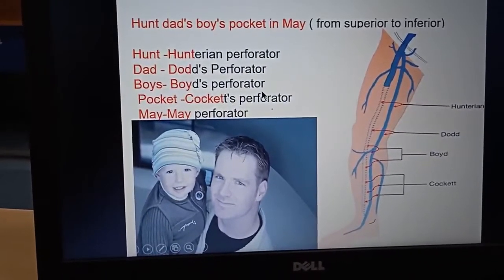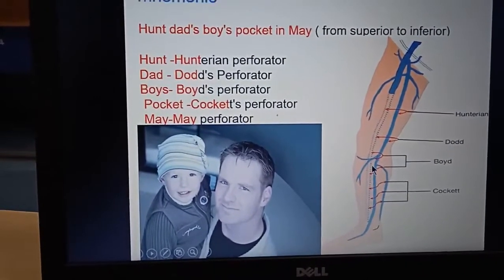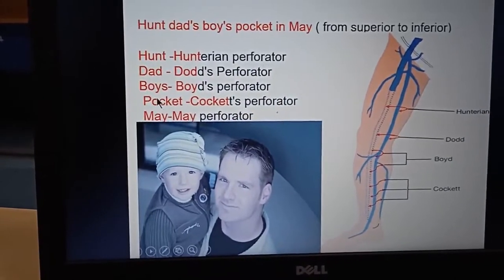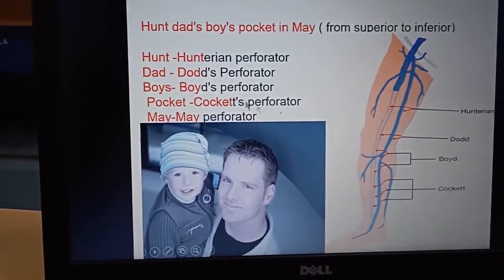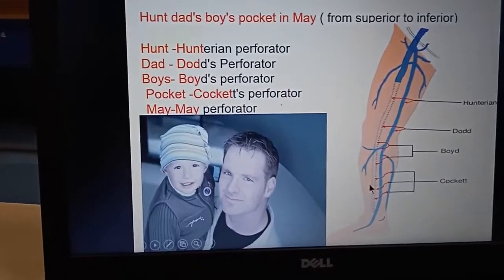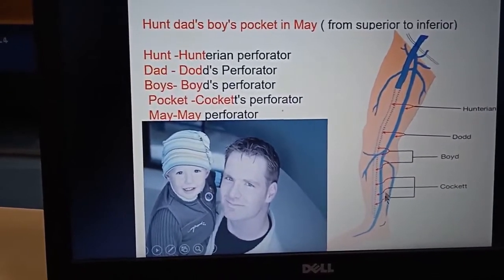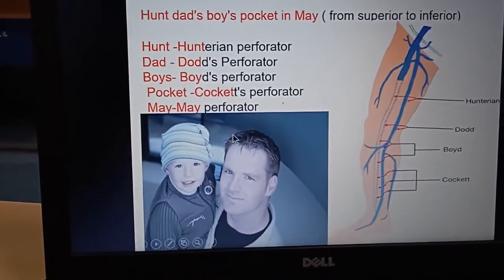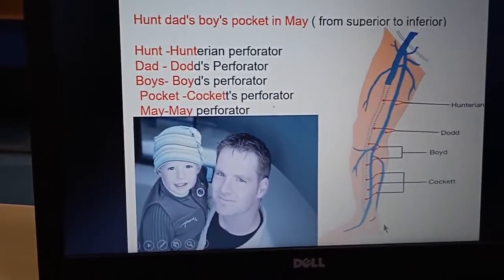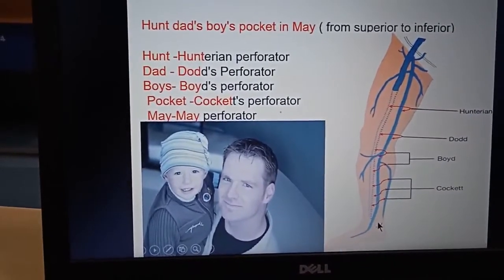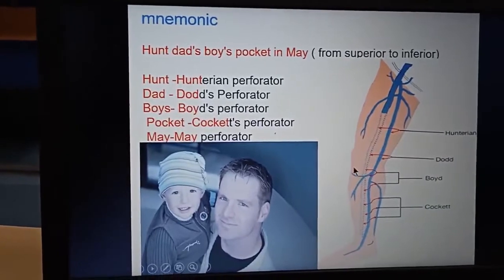Third is the Boyd's perforator in the upper one-third of the leg. 'Pocket' is homonymous with Cockett — Cockett's perforators, which are two to three in number in the lower part of the leg, connecting the superficial and the deep venous system. And lastly, the May perforator at the level of the ankle joint. So these are the perforators which connect the superficial with the deep venous system.